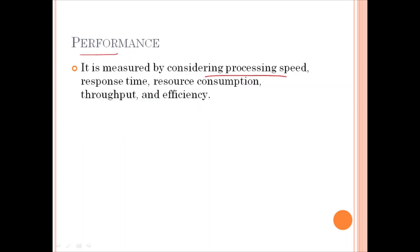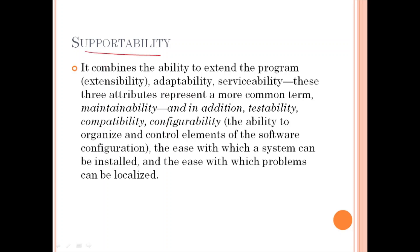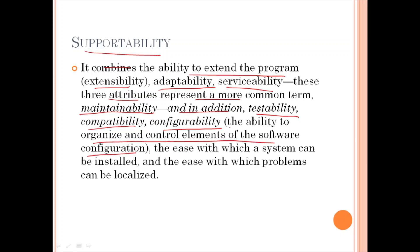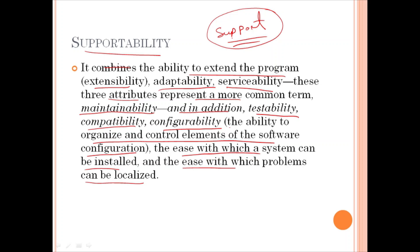Performance covers how processing speed, response time, resource consumption — how much memory and other computer system resources are consumed — throughput and efficiency. Next is supportability, which combines the ability to extend the program, that is extensibility; adaptability — whether the system is adaptable when different situations are created; and serviceability. These three attributes represent a more common term called maintainability. In addition, testability, compatibility, and configurability — the ability to organize and control elements of the software configuration — are included. Different configurations can be controlled, along with the ease of installation and the ease with which problems can be localized.